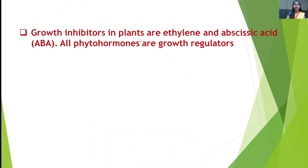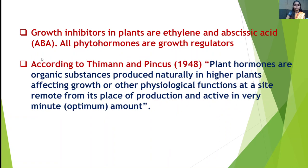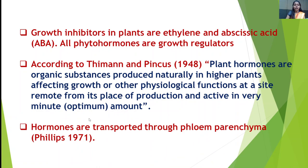Growth inhibitors in plants are ethylene and abscisic acid (ABA). All phytohormones are growth regulators. According to Thiamond and Pincus (1948), plant hormones are organic substances produced naturally in higher plants, affecting growth or other physiological functions at a site remote from their place of production and active in very minute optimum amounts. Hormones are transported through phloem parenchyma (Philips, 1971).